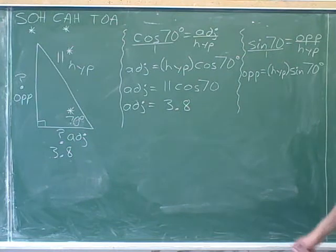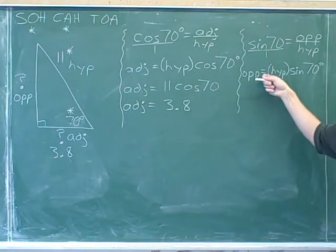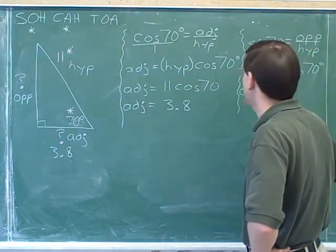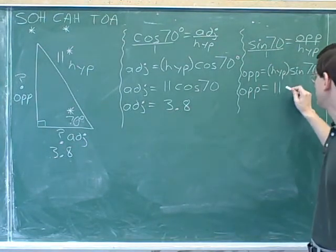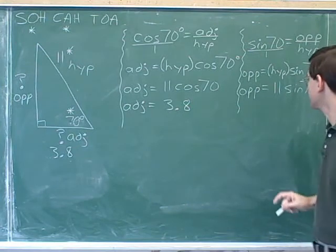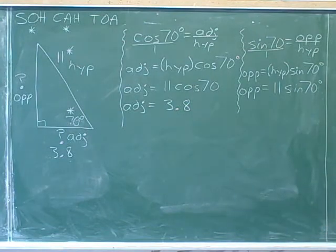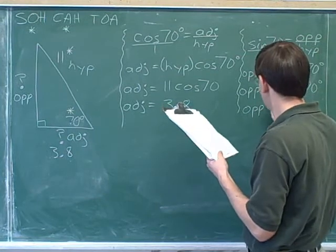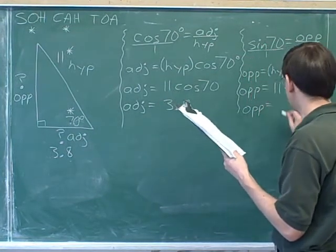It's perfectly fine to start by writing the ratio equation, but eventually you'll probably get comfortable just starting with the direct equation — that's what most people do. The hypotenuse here was 11, but the opposite side is 11 modified by multiplying by the sine of 70. Just type in 11 times sine 70 on your calculator, and we get that the opposite side has a length of approximately 10.3.